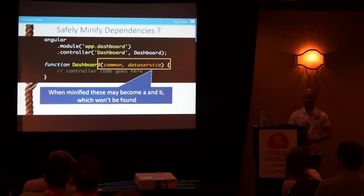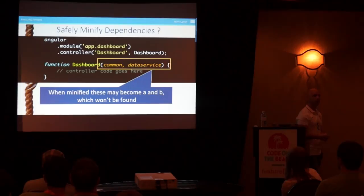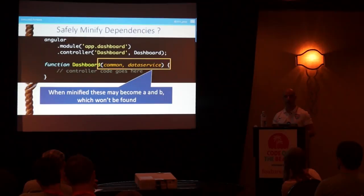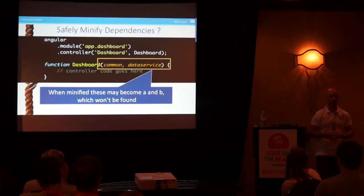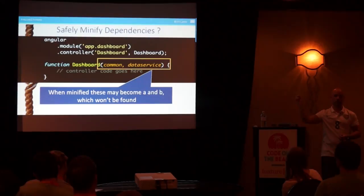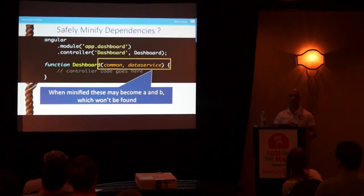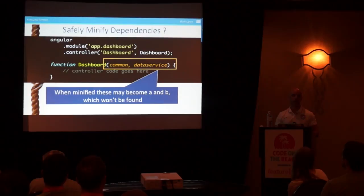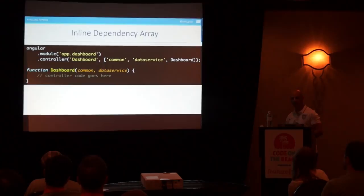What happens when you minify this code using something like uglify.js? 'common' and 'dataService' might become A and B. Angular does a toString on parameter names at runtime and tries to go find services called 'common' and 'dataService' — but after minification it'll look for a service called A or B, and you get this error: 'injector module cannot be found.' So we want to write minification-safe code, and there are a couple of ways to do this.